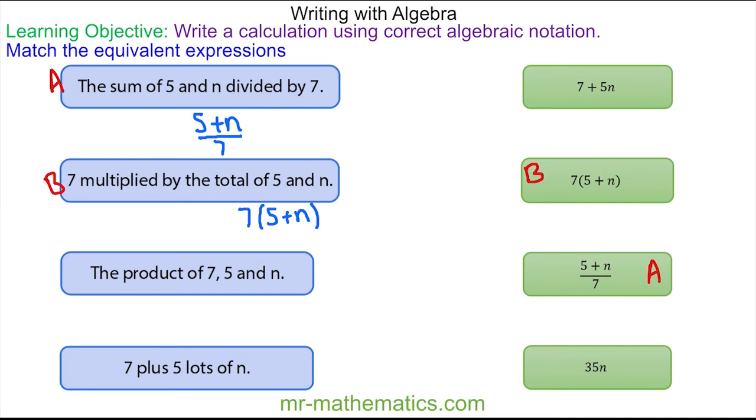Next, the product of 7, 5, and n. Now 7 and 5 are like terms, so we can multiply them together. So 7 times 5 times n becomes 35n. This one matches with this one.